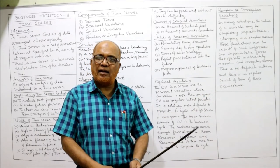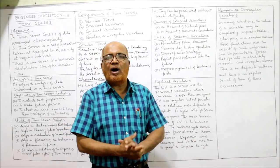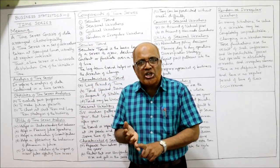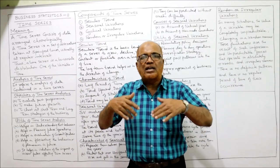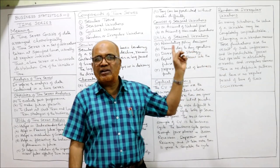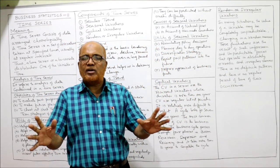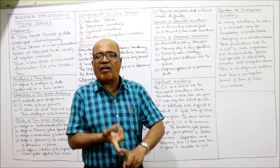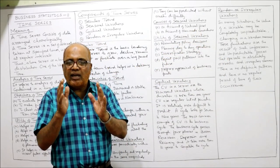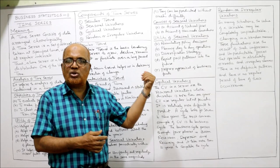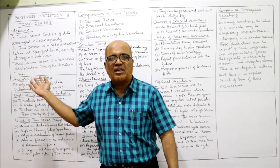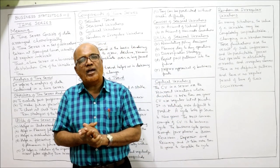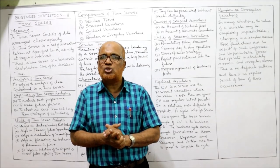So in this video I have explained the meaning of time series, the analysis of time series, the objectives of study of time series, the utility of time series, and lastly the components of time series. The components are secular trend, seasonal variation, cyclical variation, and random or irregular variation. In examination, theory will be asked on these components, or what is time series, or what is the utility of time series. After watching this video, I hope students can understand this topic and write in examination confidently.